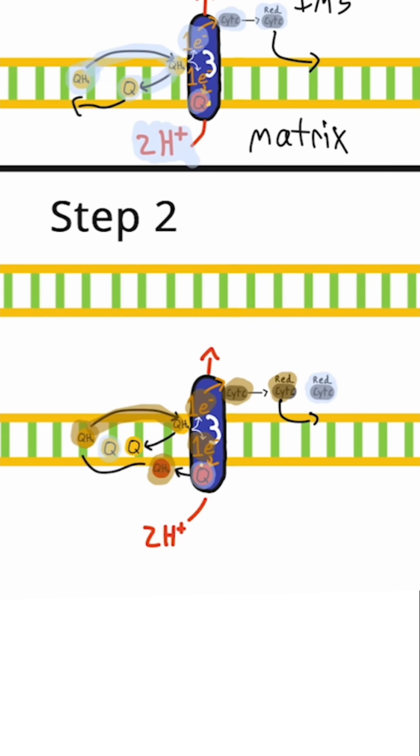This new ubiquinol will exist in the inner membrane and just be part of the total pool of ubiquinol molecules that exist there. And during step 2, we have two more hydrogens that are pumped from the matrix to the inner membrane space.